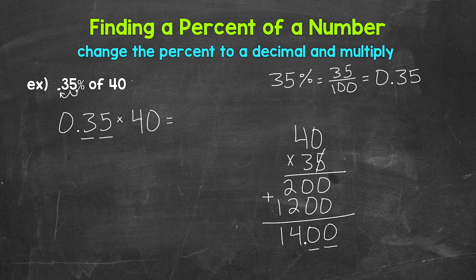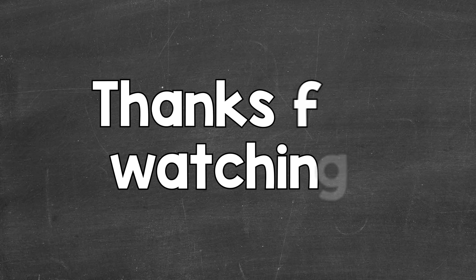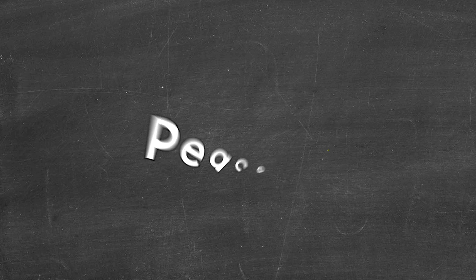That gives us an answer of 14. The 2 zeros to the right of the decimal don't change the value of anything. We have 14 either way, so we can leave those off. 35 hundredths times 40 gives us 14. So 35% of 40 is 14. So there you have it. There's how to find a percent of a number. If you need another example, check the description for a link to that video. I hope that helped. Thanks so much for watching. Until next time.